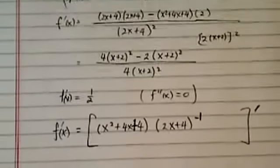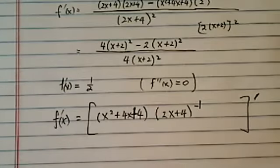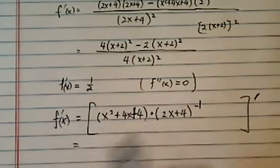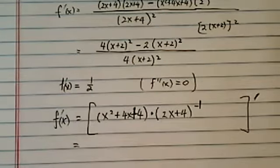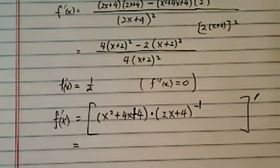I'm going to rewrite 2x plus 4 to the minus 1. Minus 1 means 1 over 2x plus 4. Okay, from here, I'm allowed to use product rule.